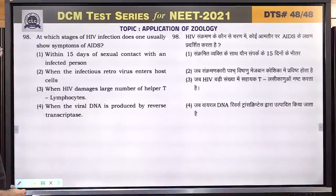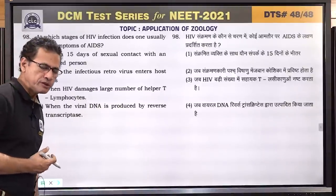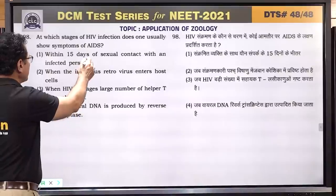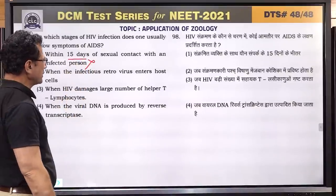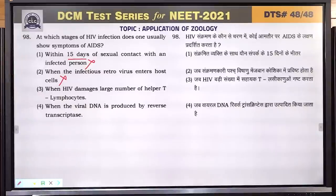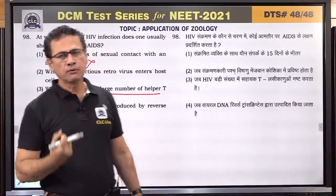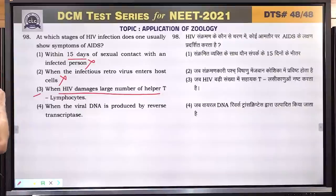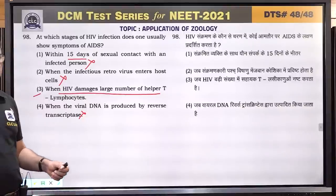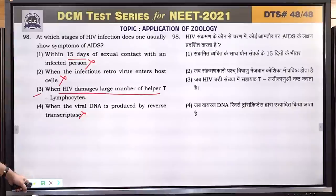Question number 98: at which stage of HIV infection does one usually show symptoms of AIDS? The incubation period is very long. Within 15 days of sexual contact — not enough time. When retrovirus enters host cell — no. When HIV damages a large number of T lymphocyte cells — yes, when large numbers of T helper cells are destroyed, host immunity goes down and symptoms appear. Answer is 3.